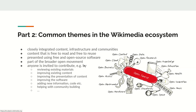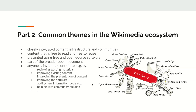With all this diversity, what are the common themes? They basically revolve around openness and integration of content, infrastructure, and communities. The content is free to read and free to reuse. The software is free to read and free to reuse, and all of this is part of the broader open movement with which it is strongly intertwined. The ecosystem is also open to contributions from essentially anyone.